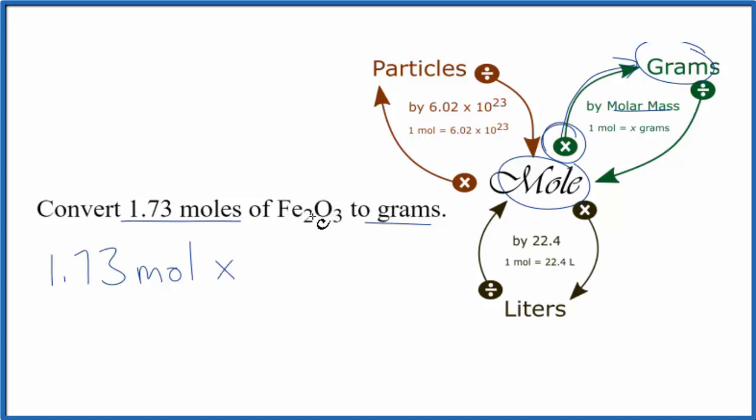Go to the periodic table, we look up the atomic mass for each element here, multiply, and we should get a molar mass of 159.69 and the units are grams per mole.